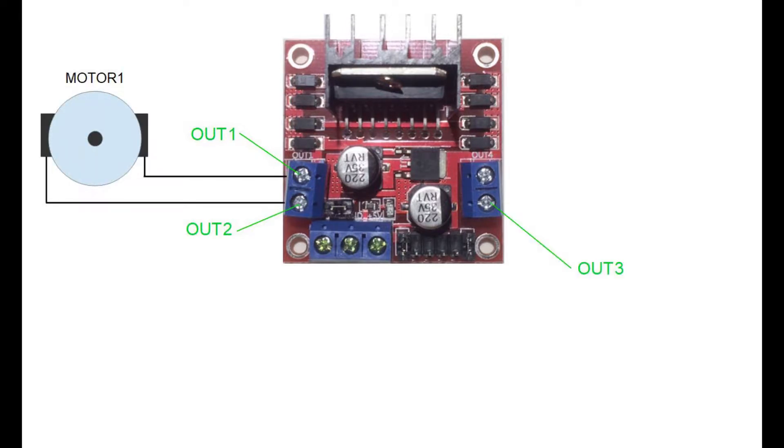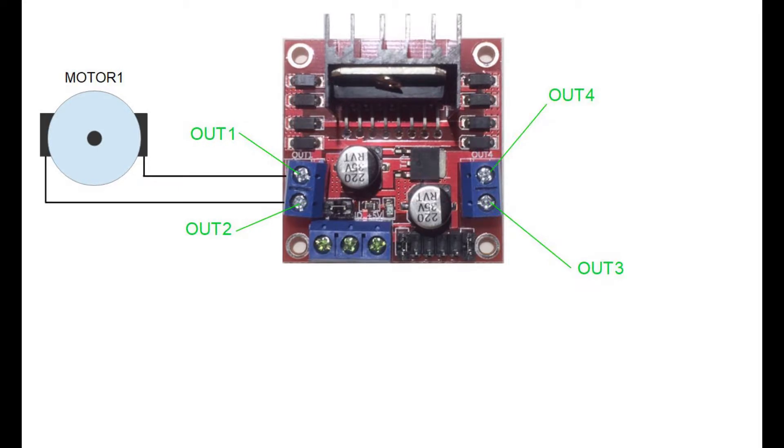First thing that you have to know is that this HB circuit doesn't contain only one HB, it actually contains two HBs and a 5V voltage regulator. This is output 1 and output 2 to which you connect your first electric motor and to output 3 and output 4 you connect your second electric motor.